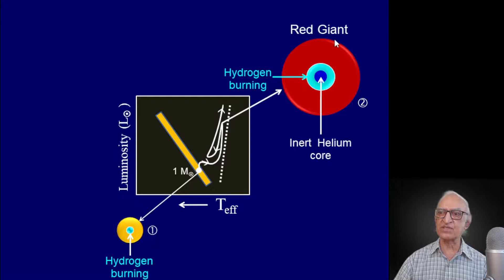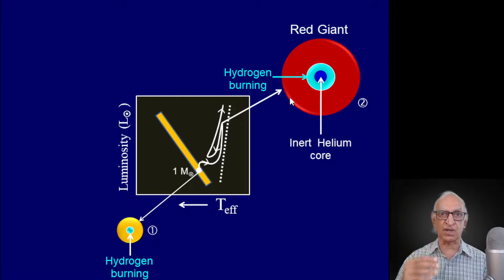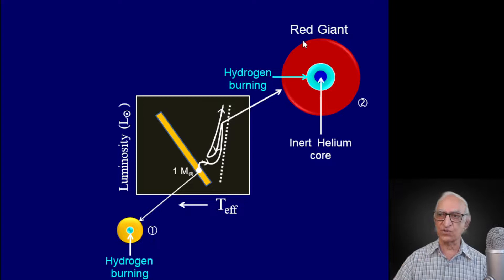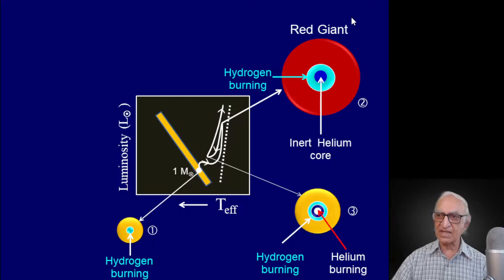When it becomes a giant, its surface temperature will drop because the luminosity remains the same. Since the luminosity of a star is given by 4πr² multiplied by σT⁴ (Stefan's law), because the luminosity on the left-hand side is the same and because r² has increased, the temperature has to drop, and that is why the star has a more reddened appearance — you will have a red giant star.